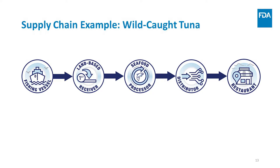This example shows a supply chain for fresh tuna which is sold at a restaurant as tuna steaks. Tuna is a fin fish and is on the food traceability list. Therefore, all entities in this tuna supply chain are covered by the food traceability rule. Next, we will walk through the critical tracking events in the supply chain where key data elements are required.